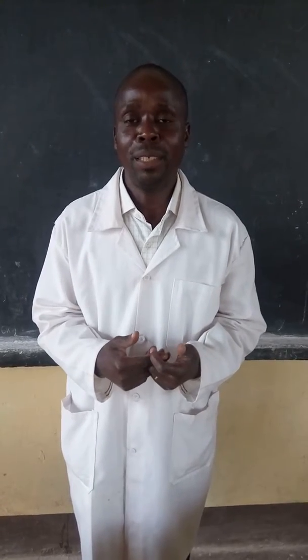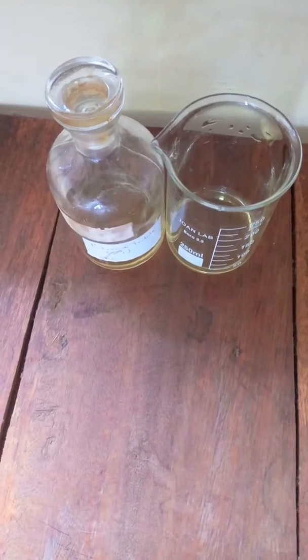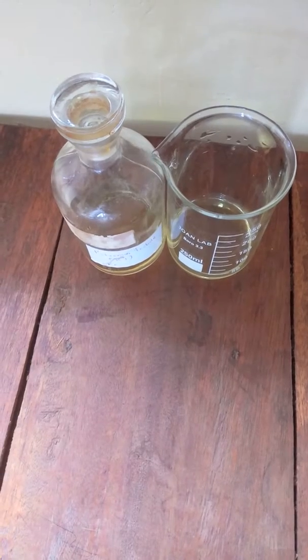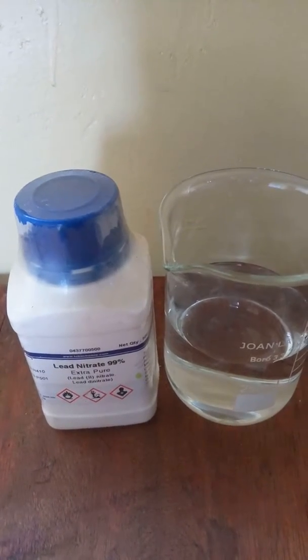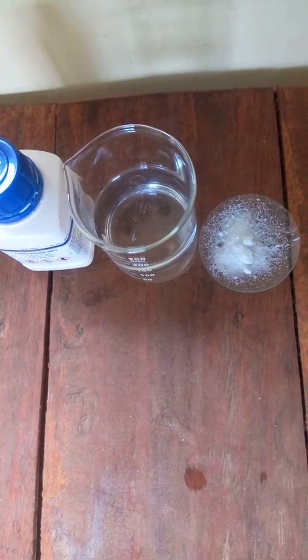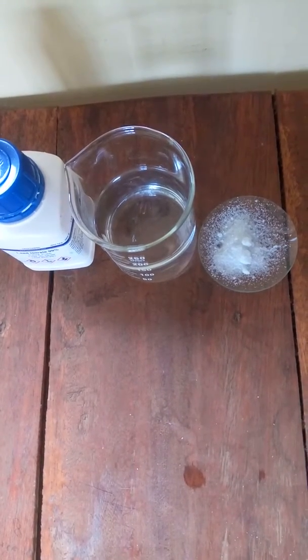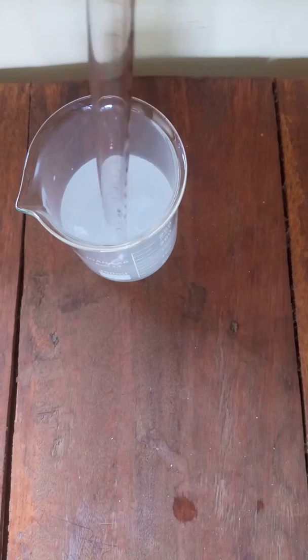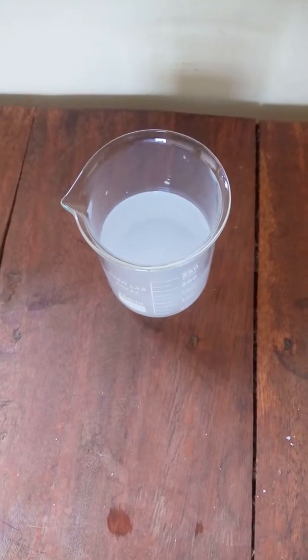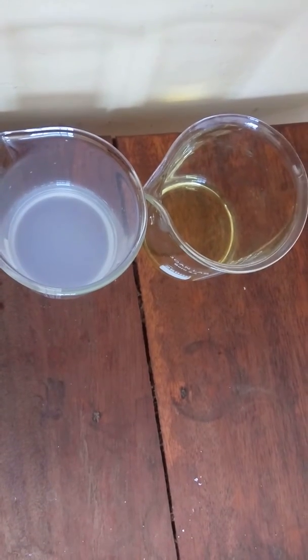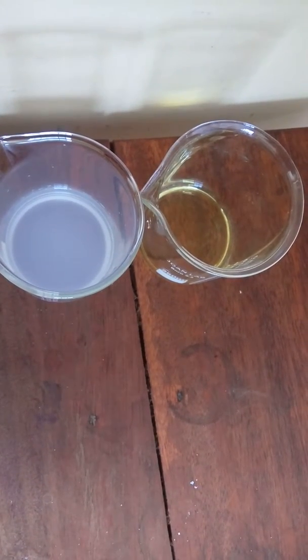I'm going to demonstrate this by using two simple experiments, using potassium iodide solution and lead(II) nitrate solution. The lead(II) nitrate is going to be dissolved in distilled water. These are two solutions which are going to be mixed.